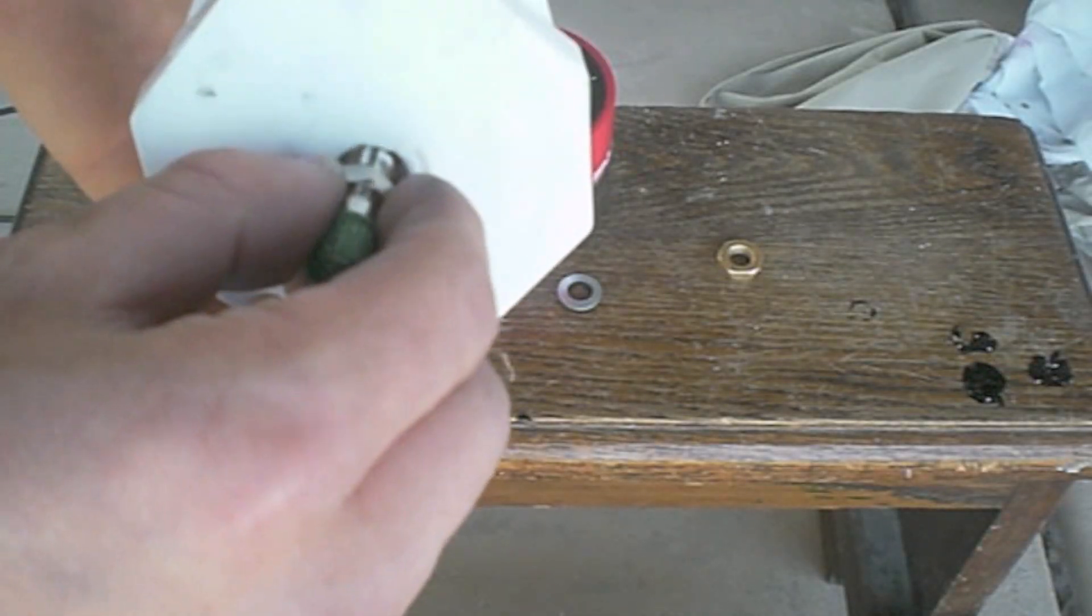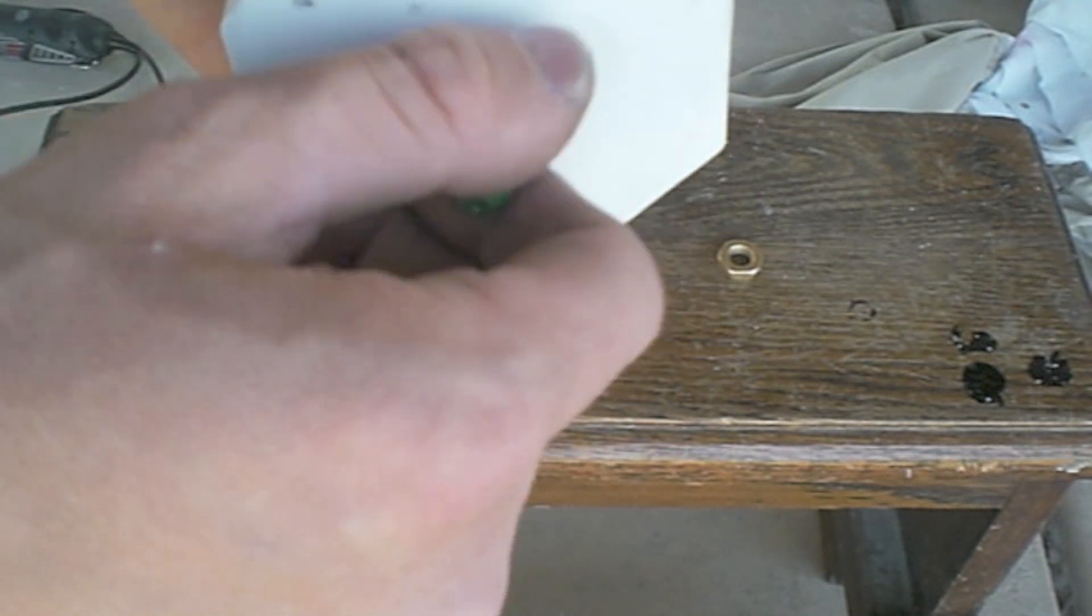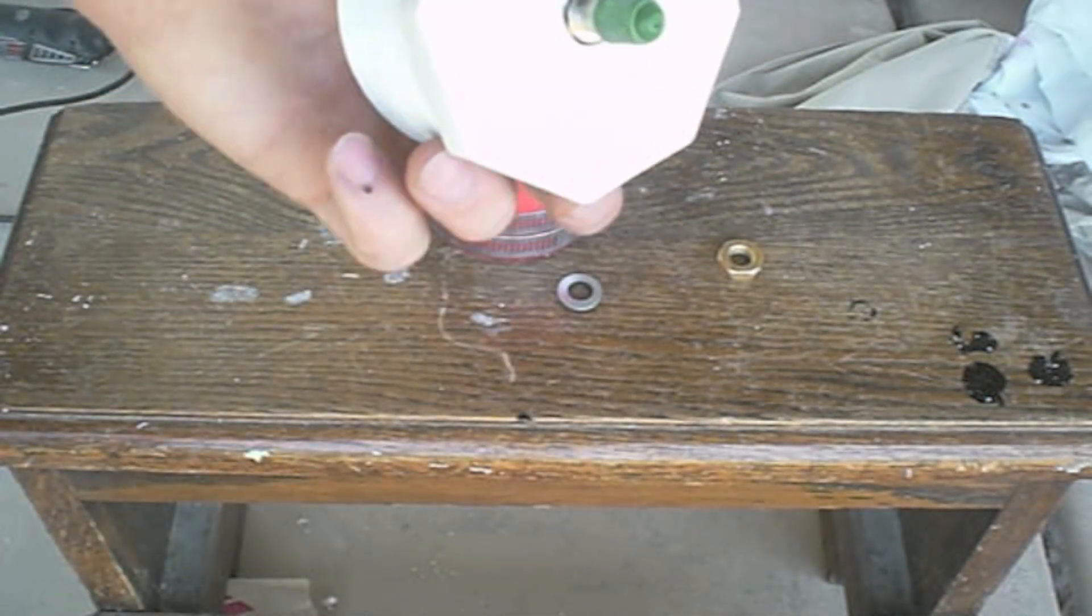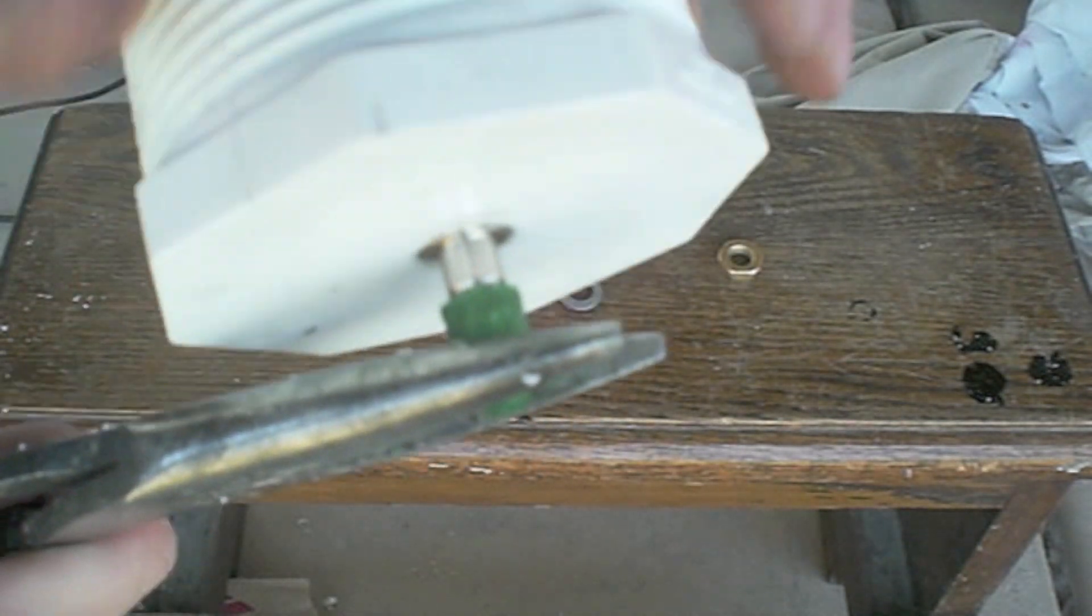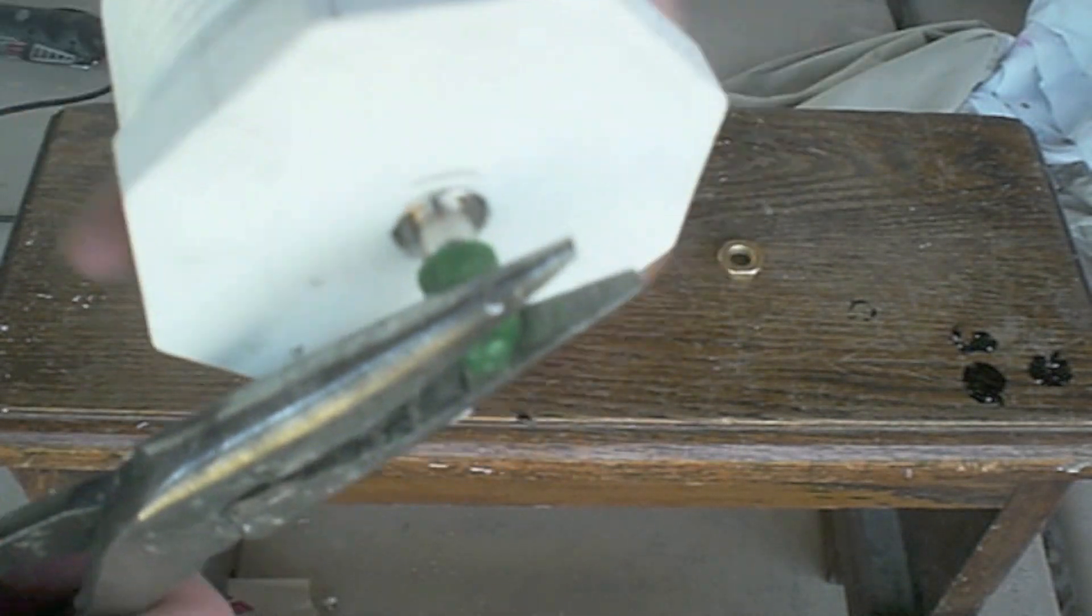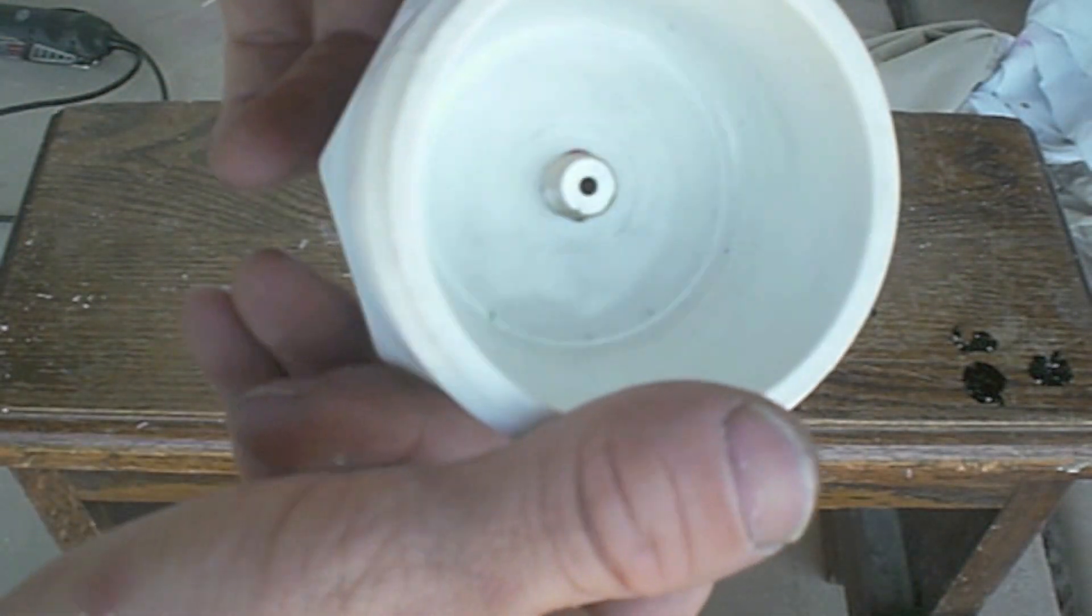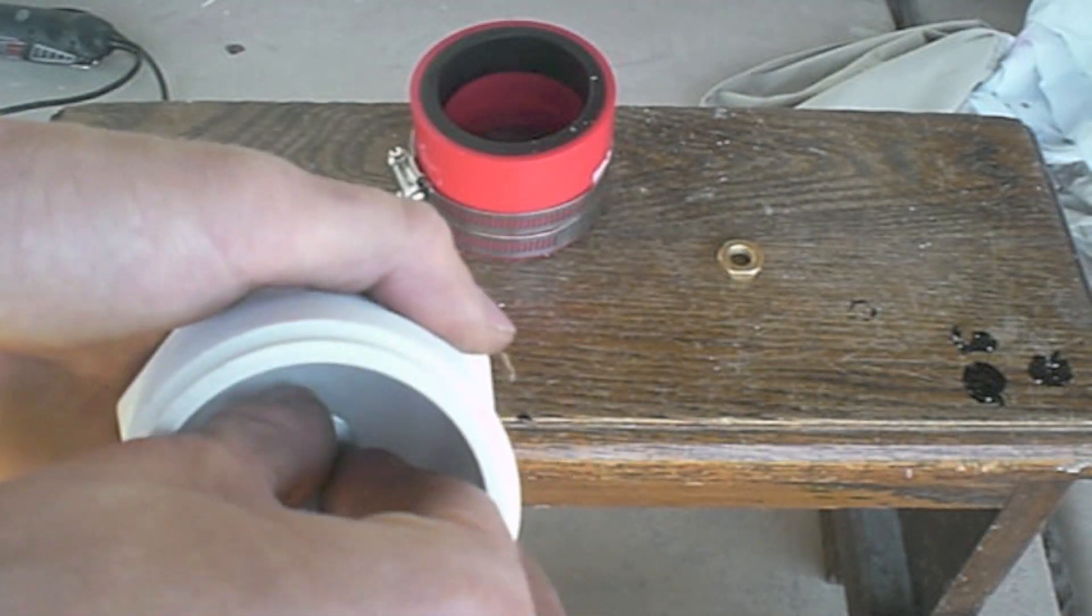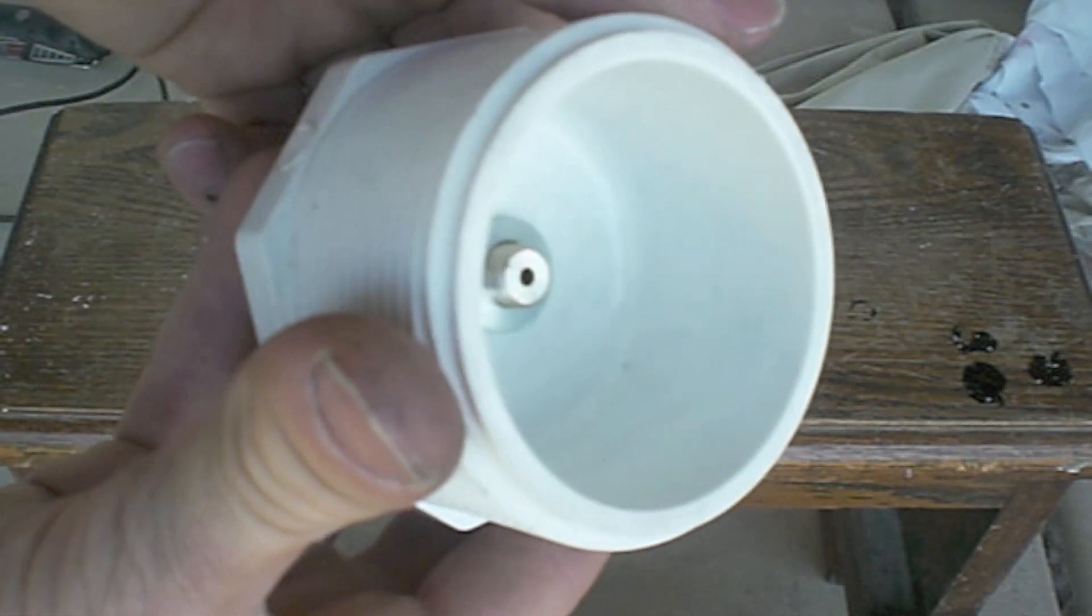You're going to put your Schrader valve in. Make sure it fits nice and flush. Tighten it extra with pliers. Make sure you don't ruin the stem or any of the threads. See how that fits nice and flush. There's tons of thread on the other side. Put your washer and gasket in.